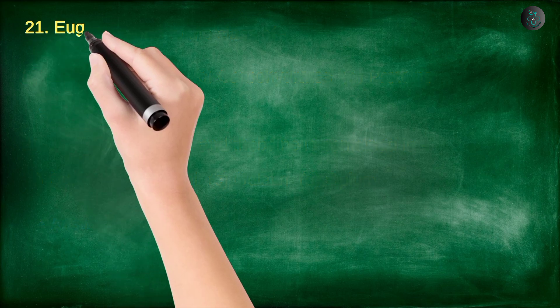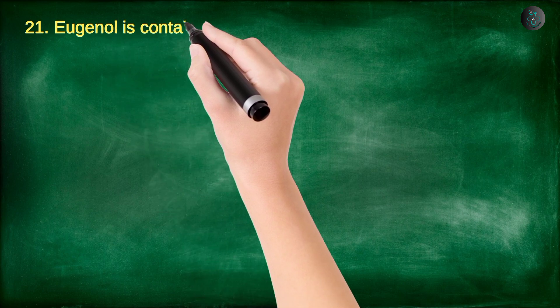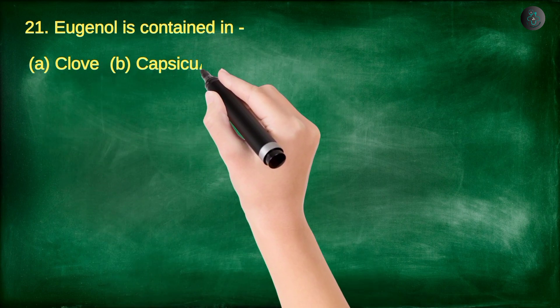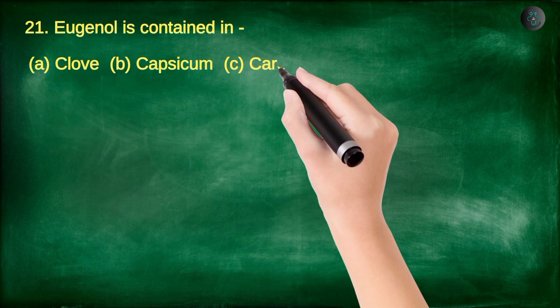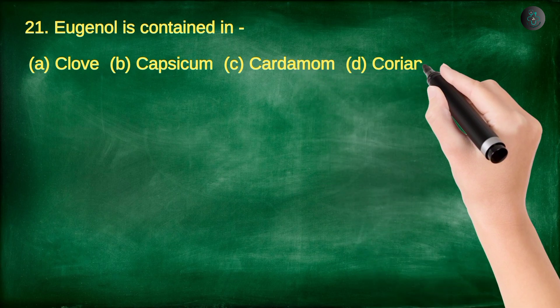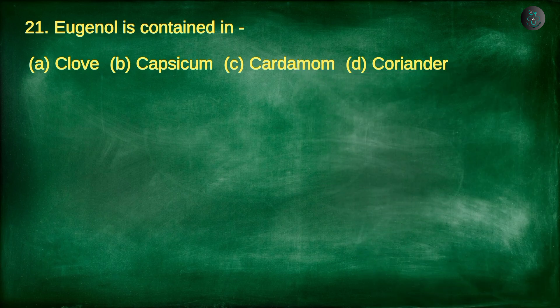Question number 21. Eugenol is contained in: A. Clove, B. Capsicum, C. Cardamom, D. Coriander.